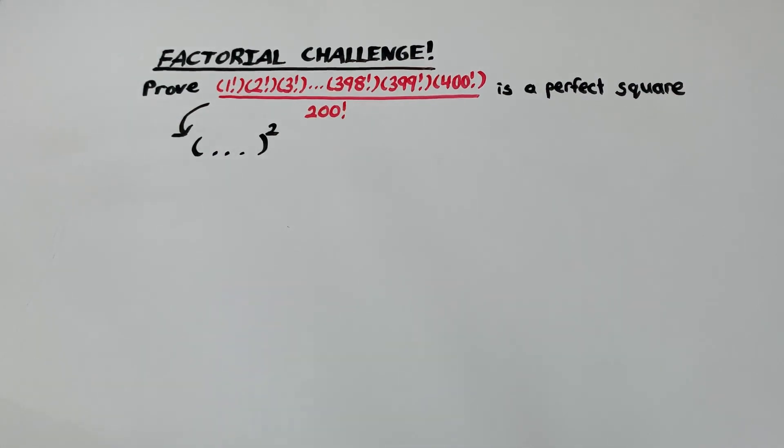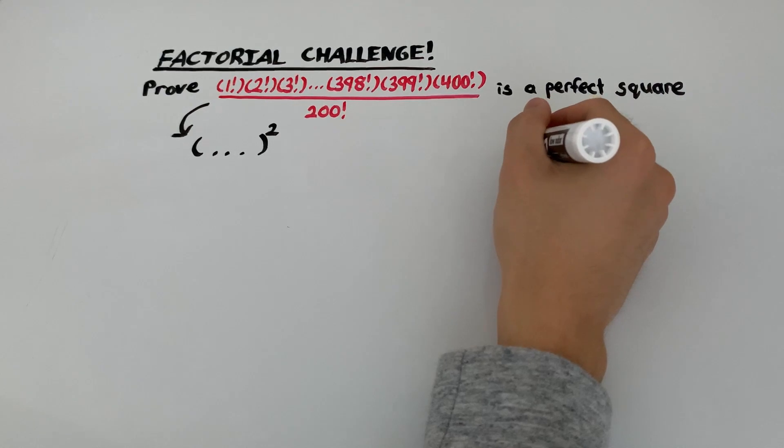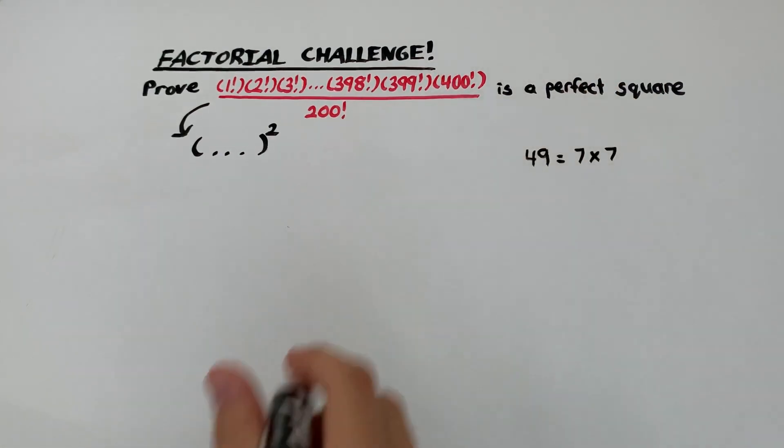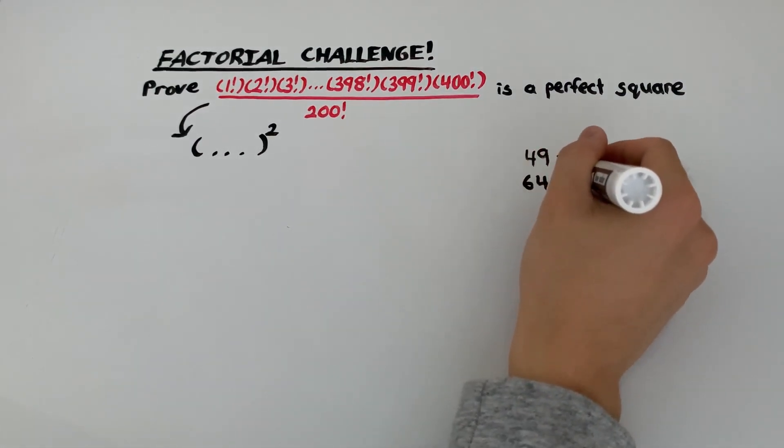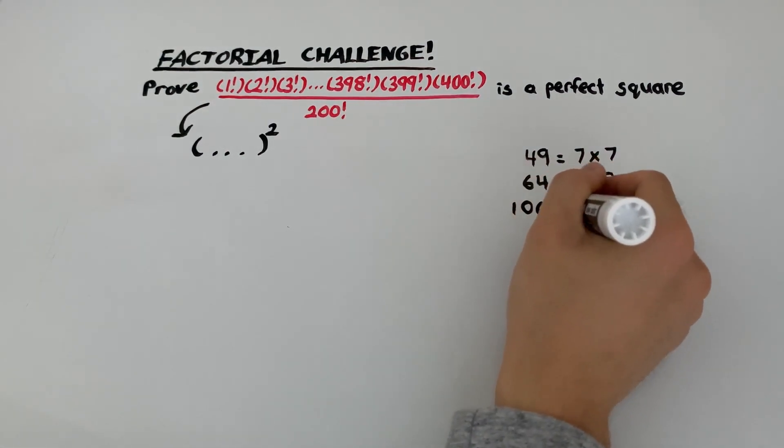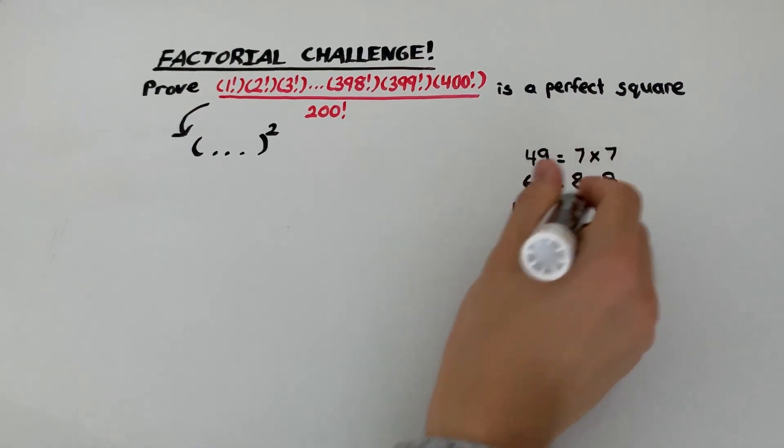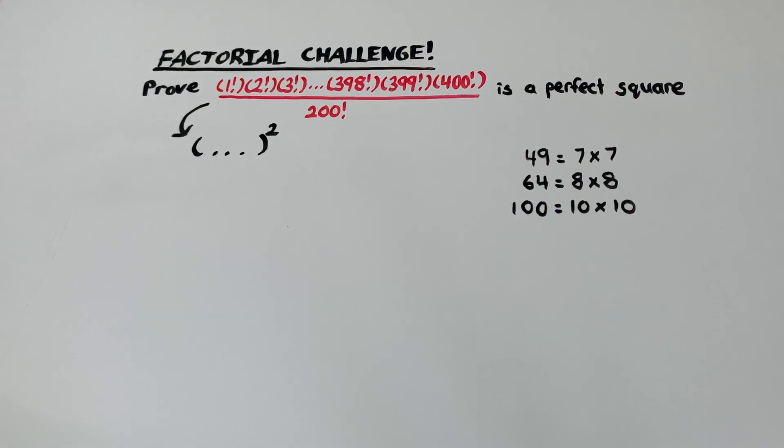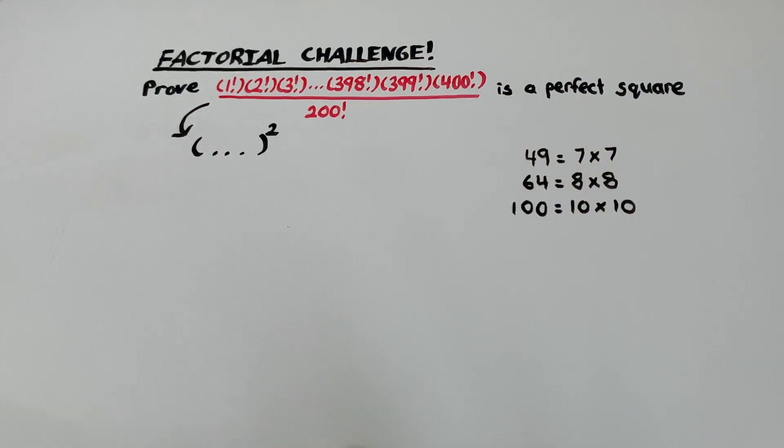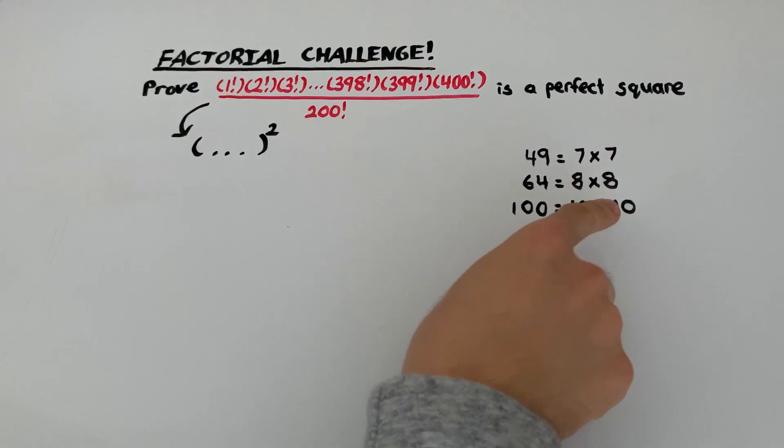We can see this with some examples like 49, which is 7 times 7, 64 is 8 times 8, and 100 is 10 times 10. So we see perfect squares seem to contain a pair of numbers that are equal to each other. Over here we have a pair of 7s, over here a pair of 8s, and over here a pair of 10s.